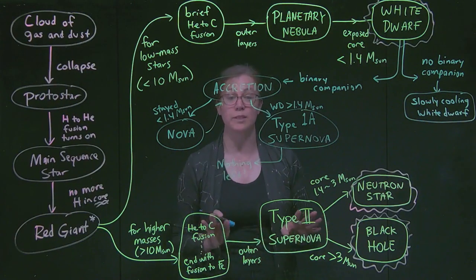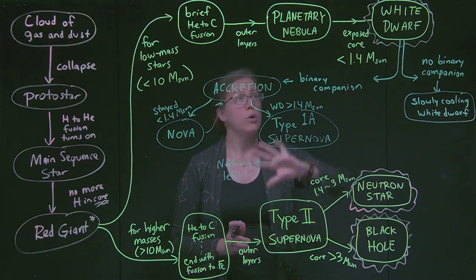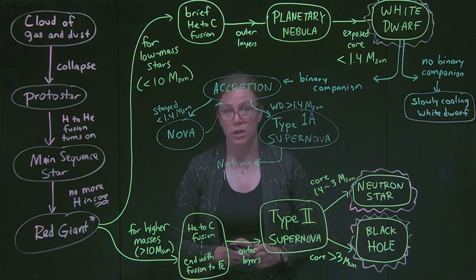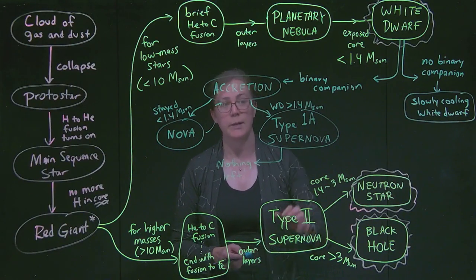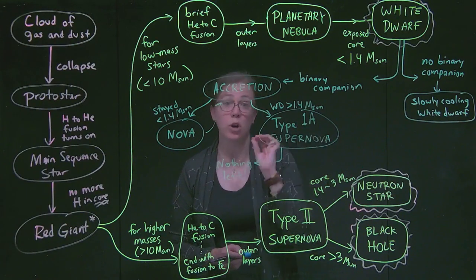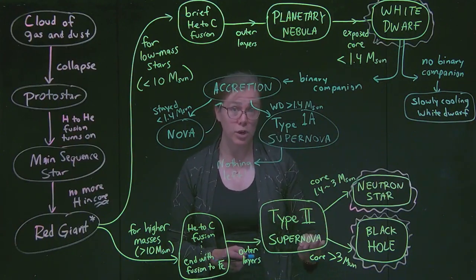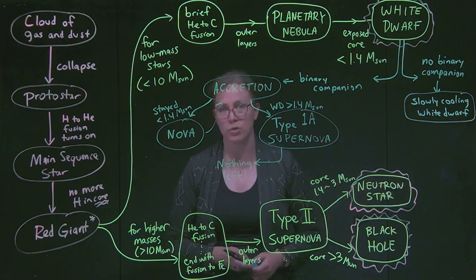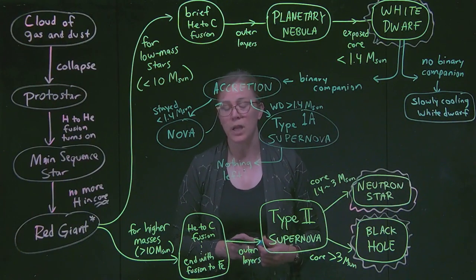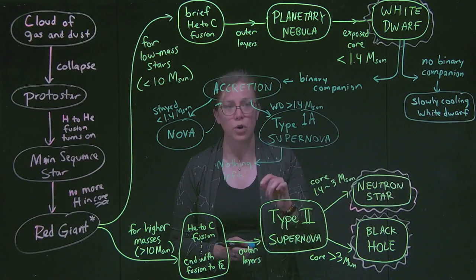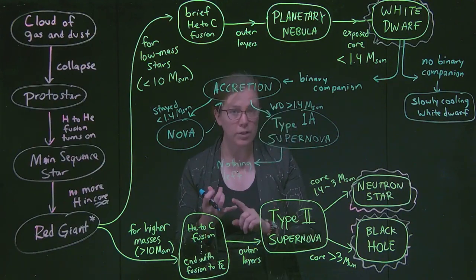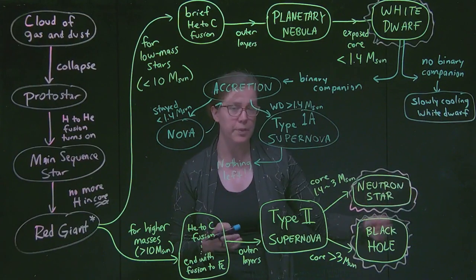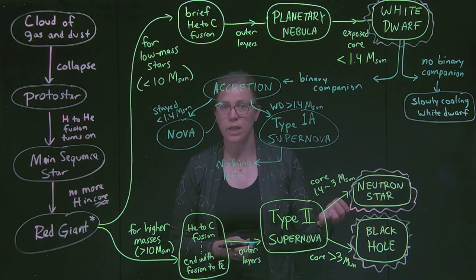So those different things that can happen for a white dwarf are explored when we talked about how low mass stars die. These type 1a supernova are extremely important to astronomers because they are part of, which we'll eventually talk about in Module 6, is called the distance ladder. Being able to know that that type 1a supernova is the same kind of object with the same amount of mass exploding every single time allows astronomers to use it as what's called a standard candle.